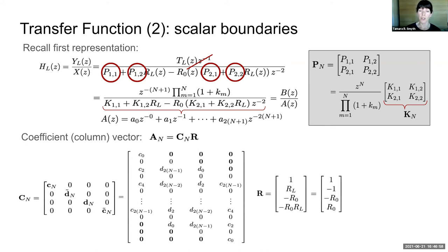And the vector R contains the scalar boundaries. The coefficient vector here is interleaved with zeros as were the coefficients C and D.